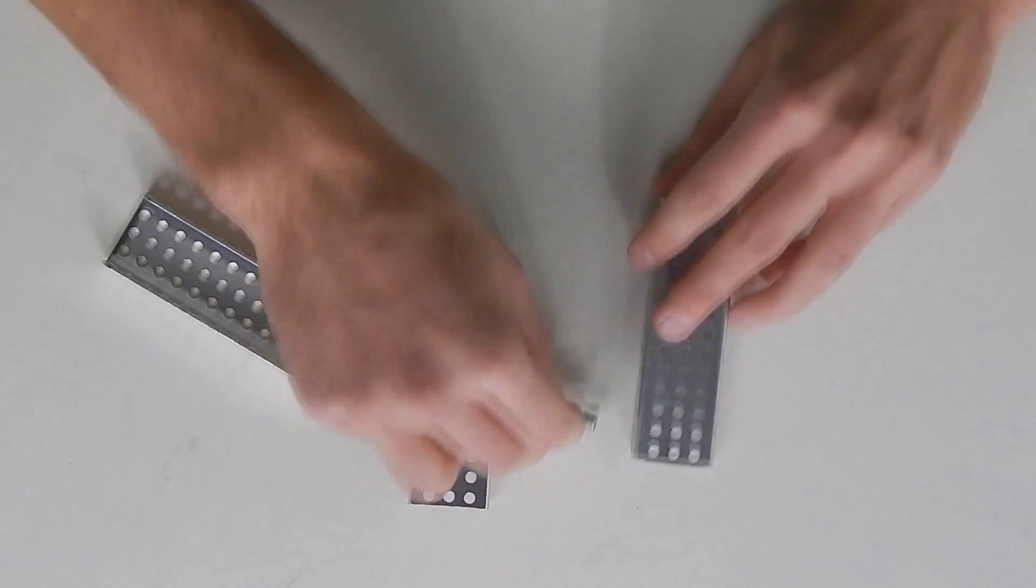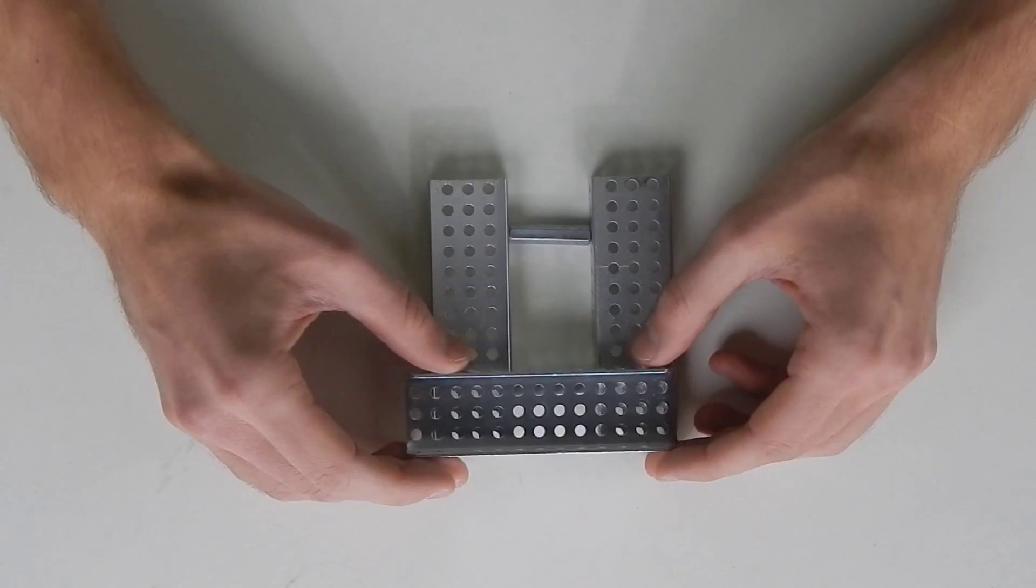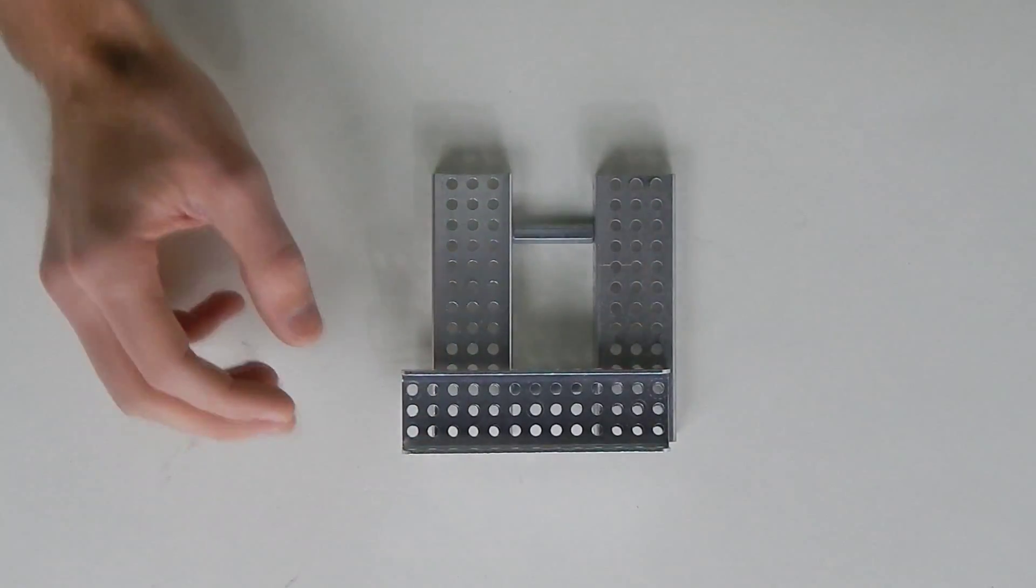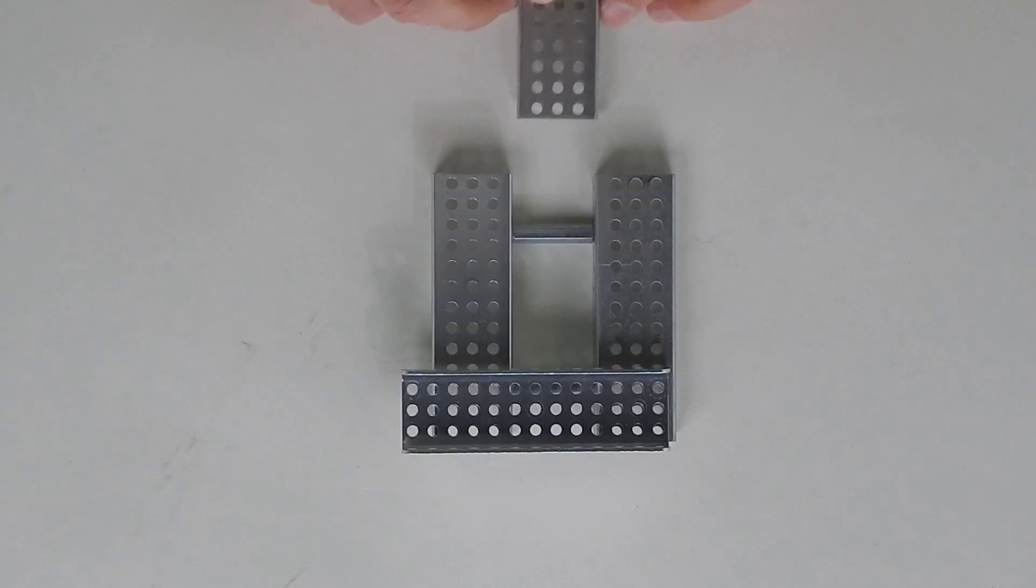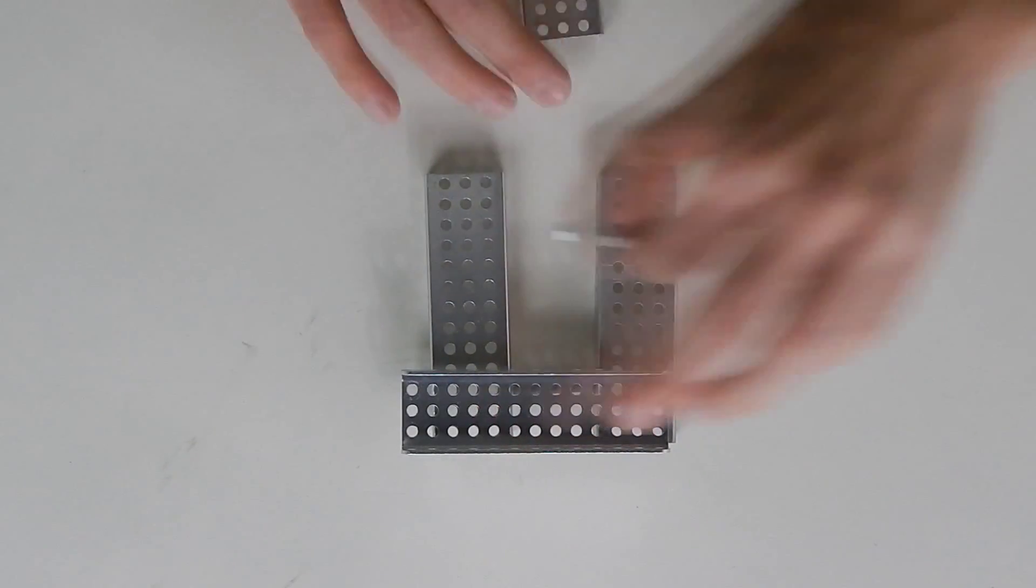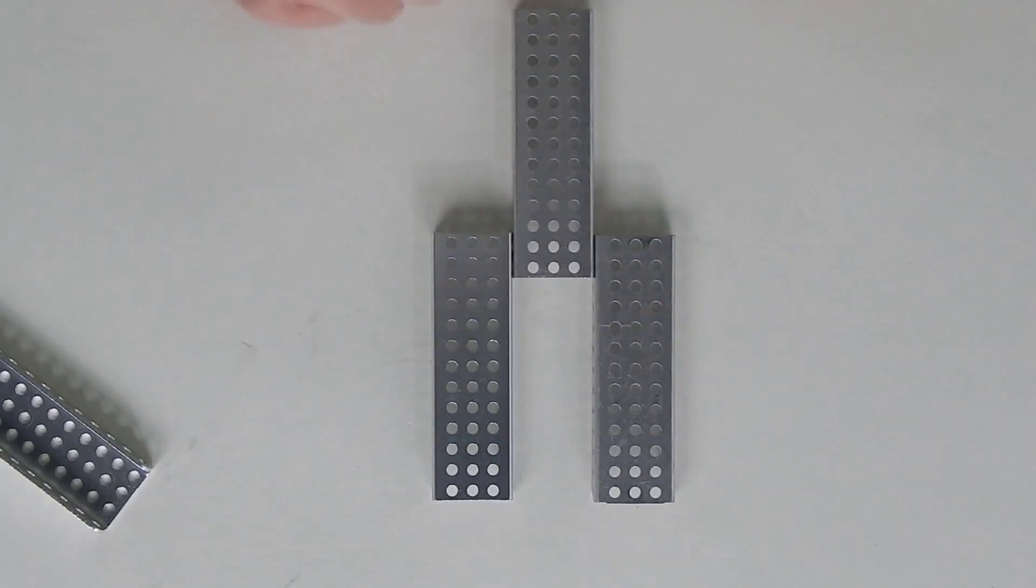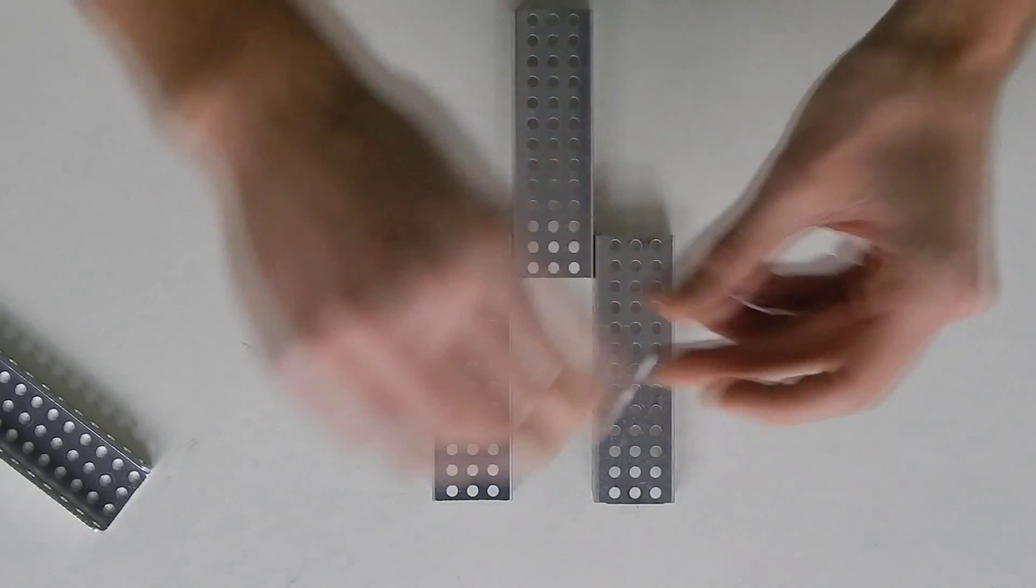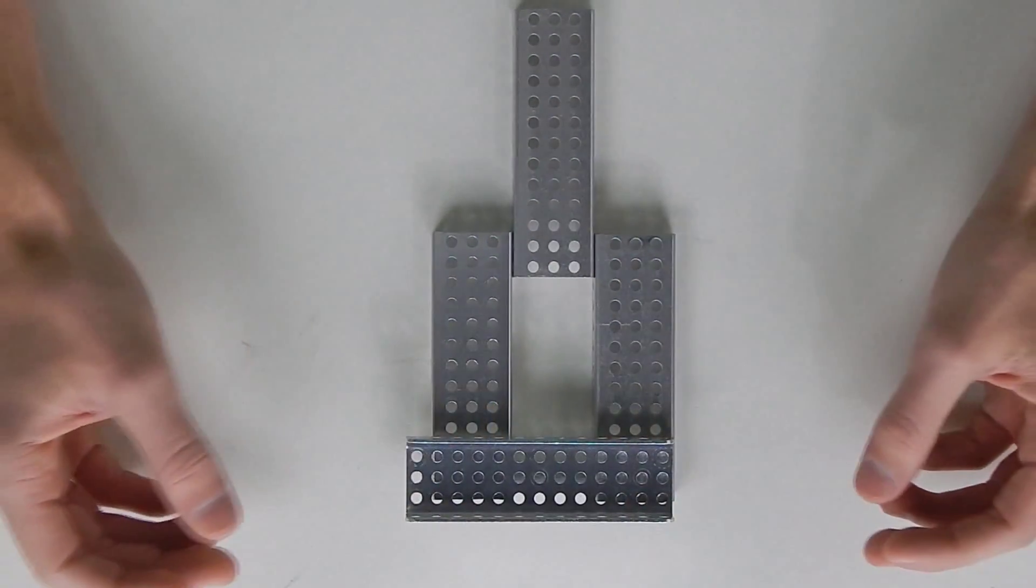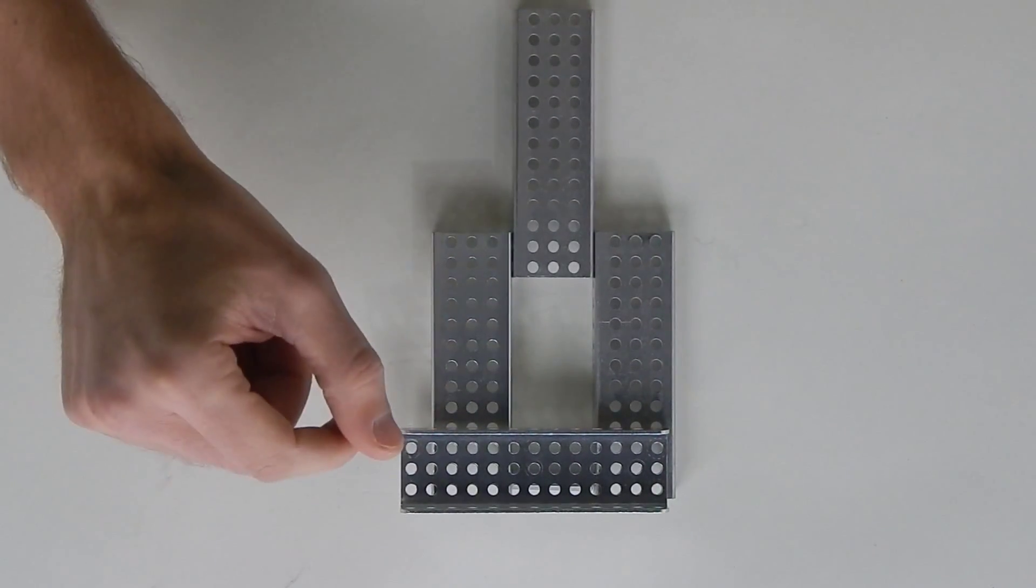You can do the same thing with the 32 millimeter standoffs and that will also make the holes line up nice and well. Notice that 32 millimeter standoff is the same size as a C channel. So let's say you had to make something like this - that isn't going to be very strong. You could take a standoff and put it between the holes up here and then everything is still on grid because all these holes still line up.